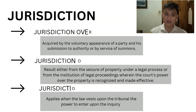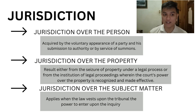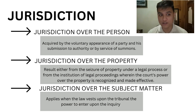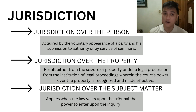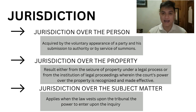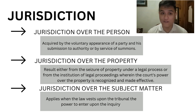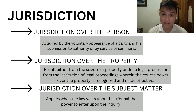Moving forward to the three phases of Conflict of Laws, the first one would be jurisdiction. The first is jurisdiction over the person, which is acquired by voluntary appearance or by service of summons. Second is jurisdiction over property, acquired by seizure of property under a legal process. And the third is jurisdiction over subject matter, which applies when the law vests upon the tribunal the power to enter upon the inquiry.